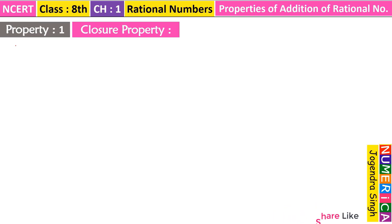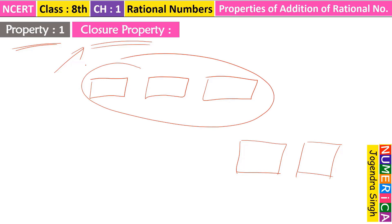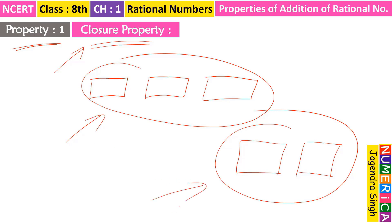Here is our Property number 1, which is the Closure Property. First you need to understand what is closure property. Suppose we have one rectangle, another rectangle, and one more rectangle — but we also have a square and another square. These three rectangles belong to the same variety, same species, and the squares are of one variety. They are all rectangles and they are all squares.